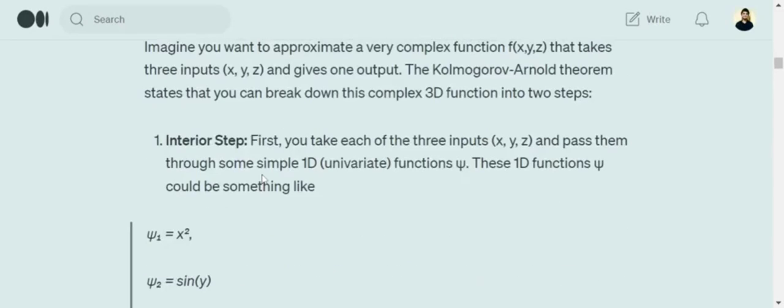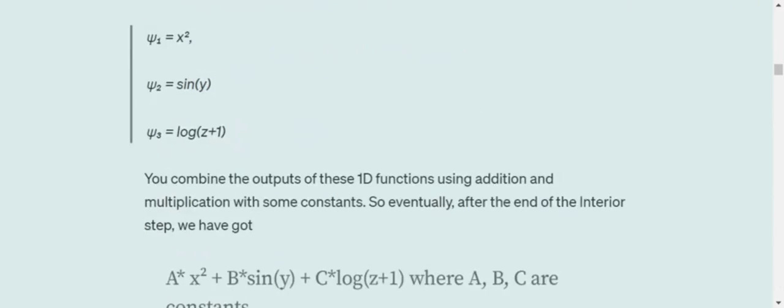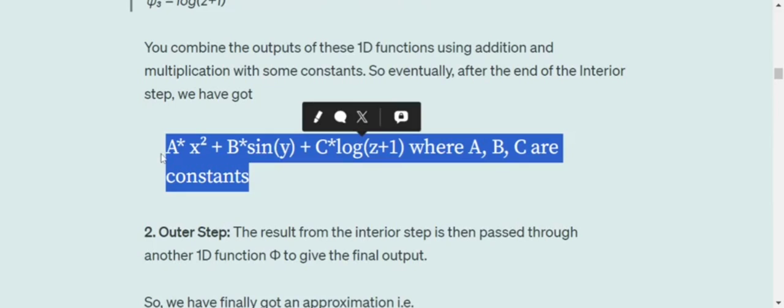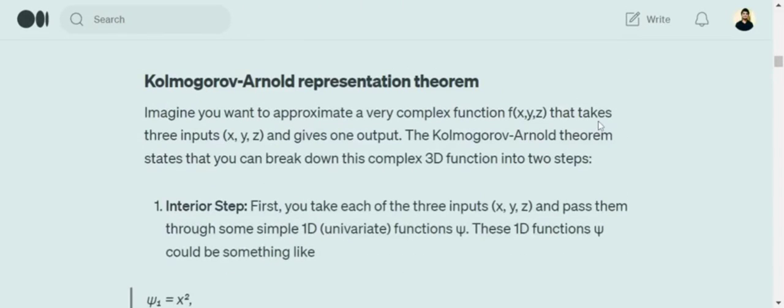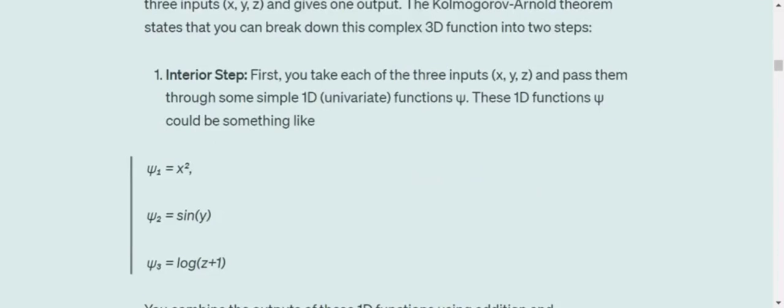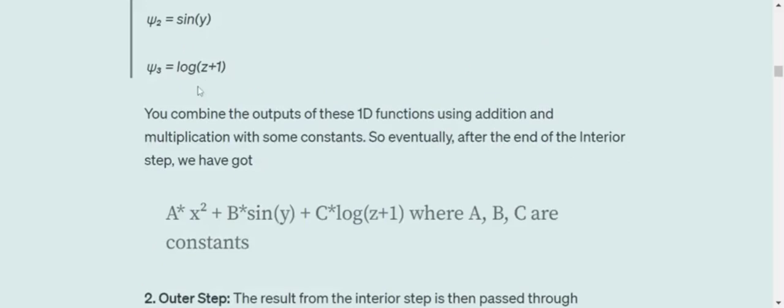So eventually, once the interior step is done, we get this particular output: a into x square plus b into sine y plus c into log z plus 1, where a, b, c are constants. So basically, this particular combination that we are trying to get, approximating the 3D function using a combination of 1D functions, is in two steps. The first one was the interior step,